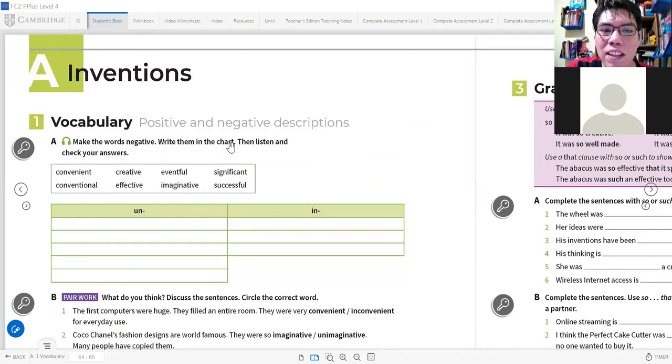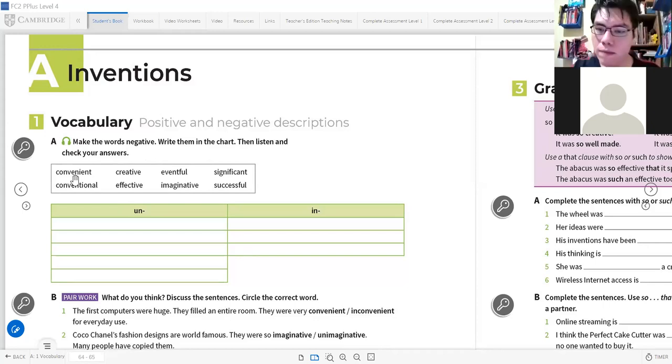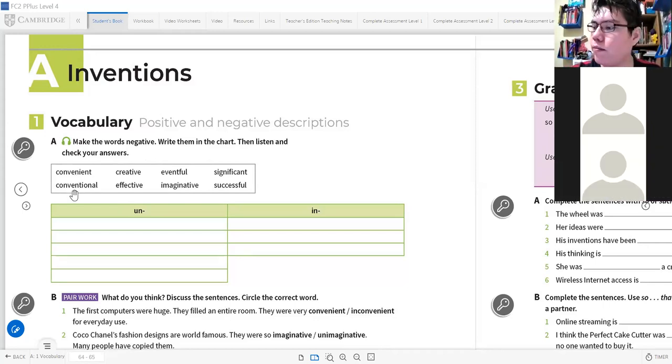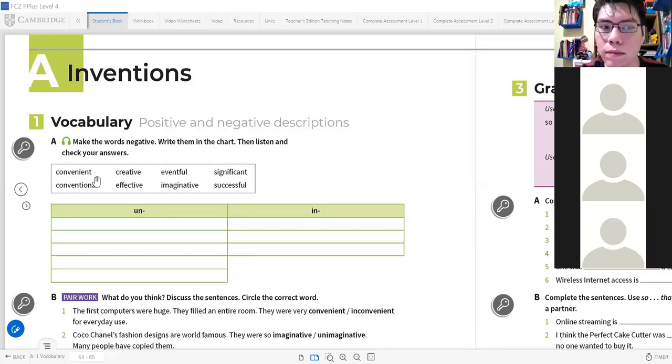Okay, so make the words negative, write them in the chart, then listen and check your answers. Tenemos aquí las palabras, repiten después de mí. Repeat after me. Convenient. Creative. Effective. Eventful. Imaginative. Significant. Successful.